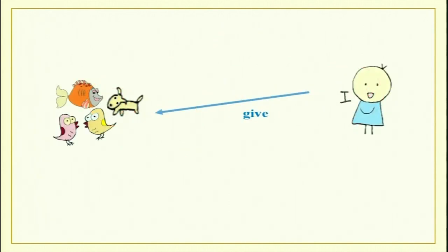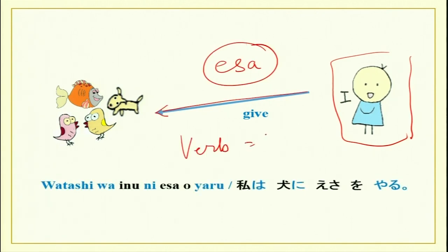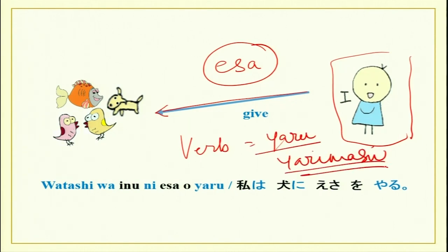Another important thing to keep in mind is when you are giving things to animals. You give them food, which is esa in Japanese, and the verb used is yaru or yarimasu.